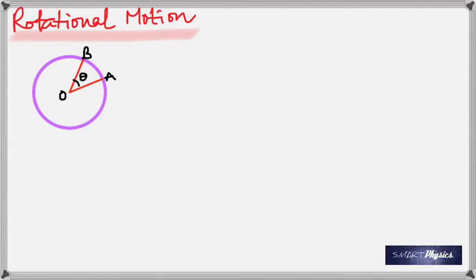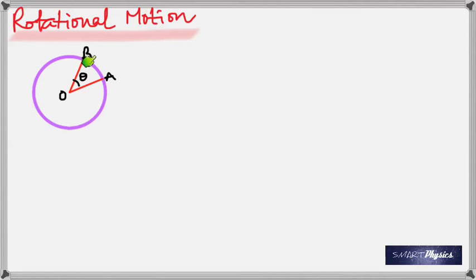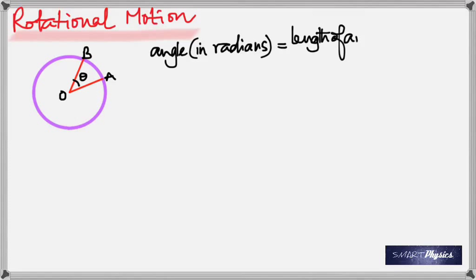As the object moves from A to B, counterclockwise — which is taken as positive in physics — the angular displacement is theta, and let's say it took T seconds to do that. The angle has to be in radians. Angle is defined as the length of the arc divided by the radius — that's the definition of angle in radians. So theta would be arc AB divided by the radius.